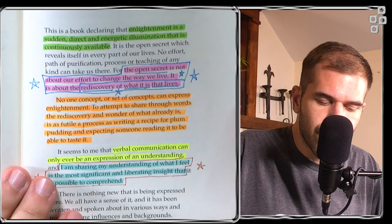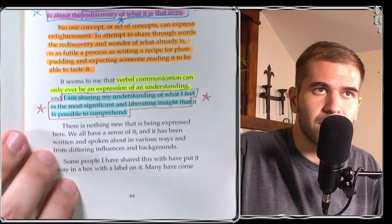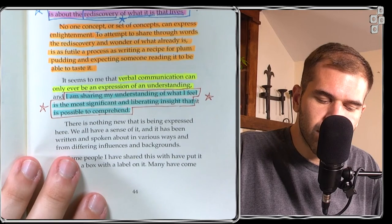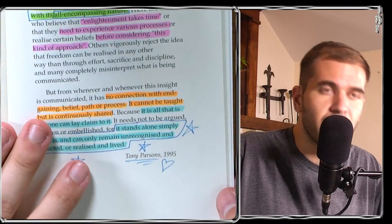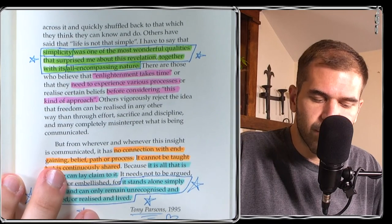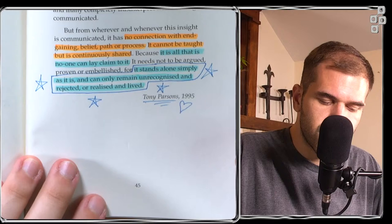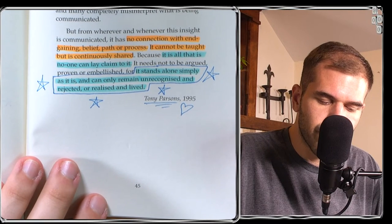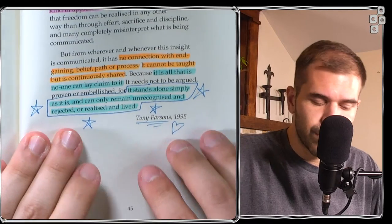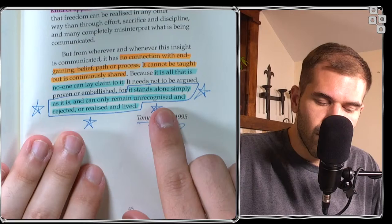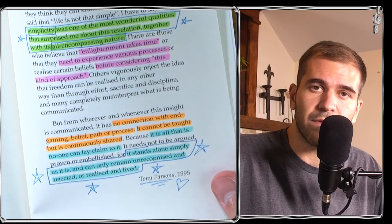The open secret is not about our effort to change the way we live. It is about the rediscovery of what it is that lives. I am sharing my understanding of what I feel is the most significant and liberating insight that is possible to comprehend. Simplicity was one of the most wonderful qualities that surprised me about this revelation together with its all-encompassing nature. It stands alone simply as it is and can only remain unrecognized and rejected or realized and lived. So pretty simple that you can either realize it and live it or not recognize it and reject it. So either you're a separate self or you're the oneness.